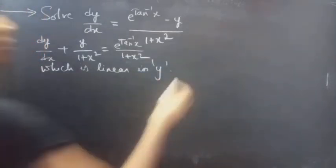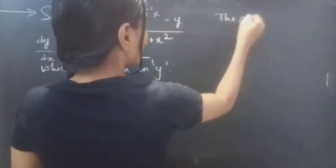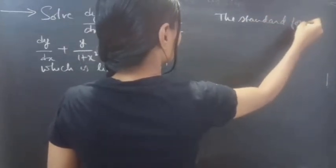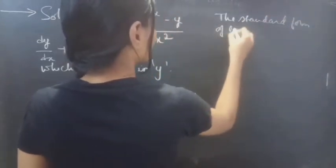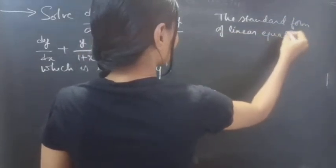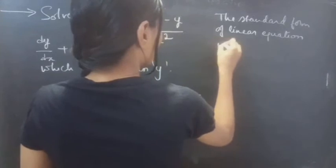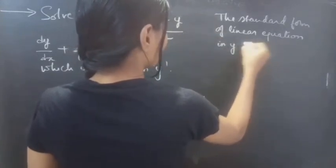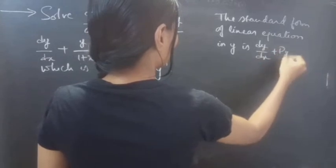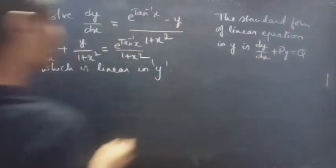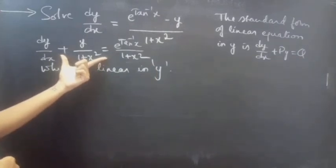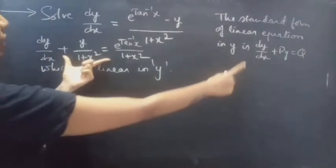We know that the standard form of a linear equation in y is dy/dx plus P times y equals Q. So, we can say that this equation is in the standard form of a linear equation in y.